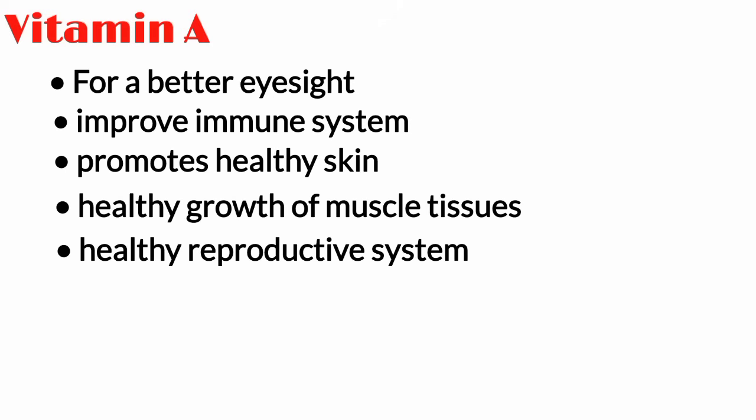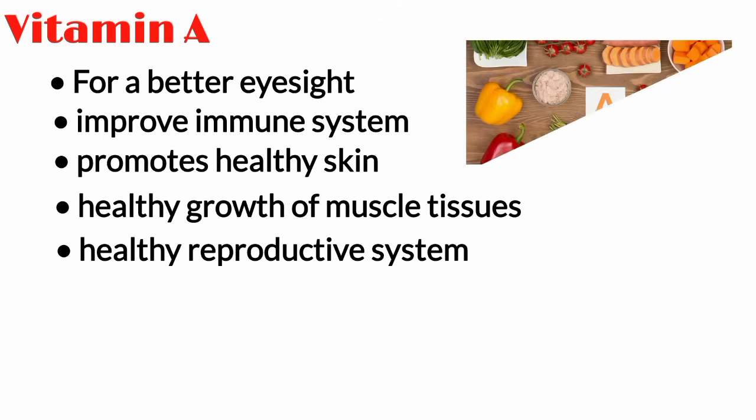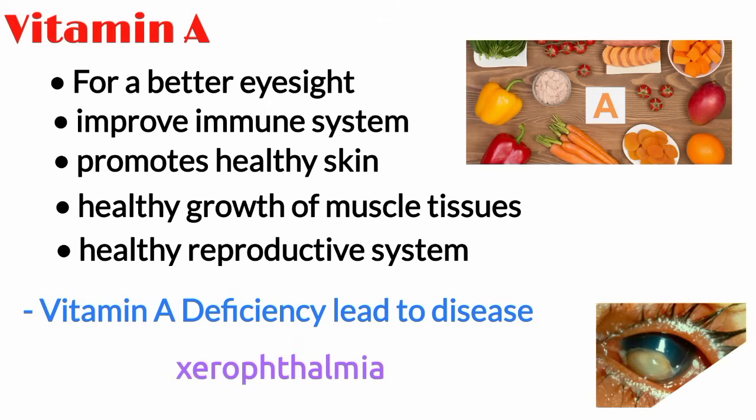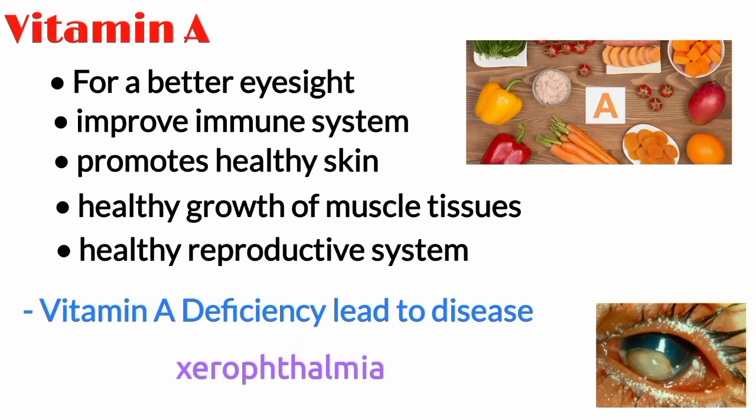It is found in eggs, fish, and different milk products. If the vitamin A is not present in sufficient amount, it could lead to a disease known as xerophthalmia. Xerophthalmia is abnormal dryness of the conjunctiva and cornea of the eye.